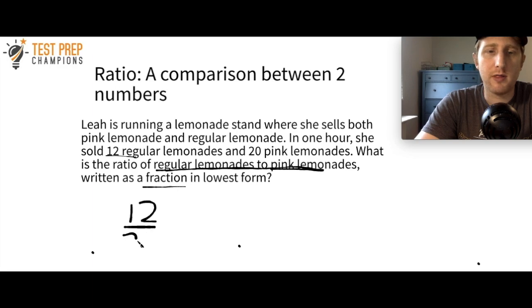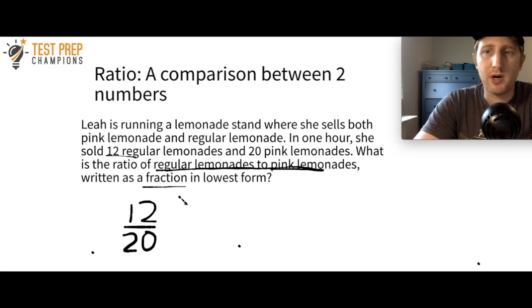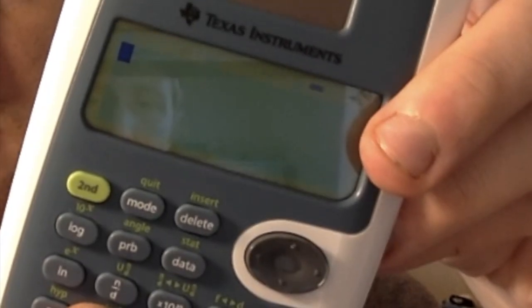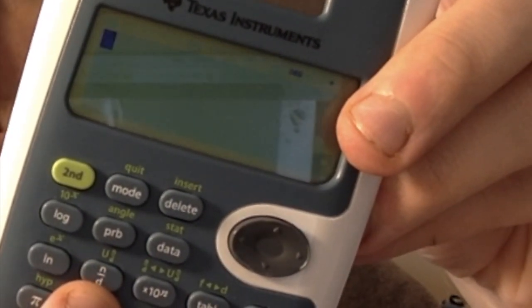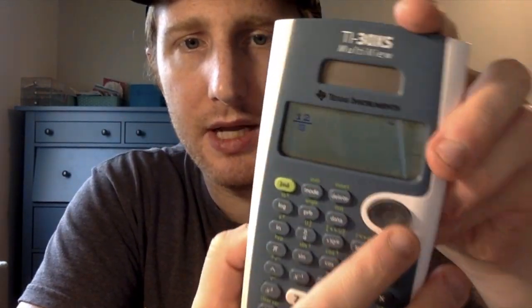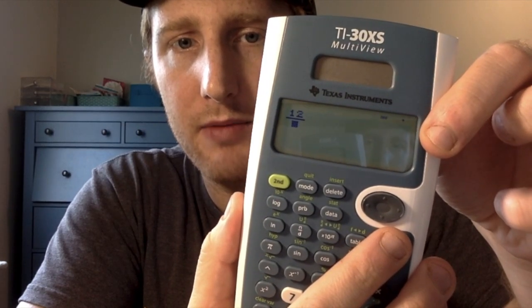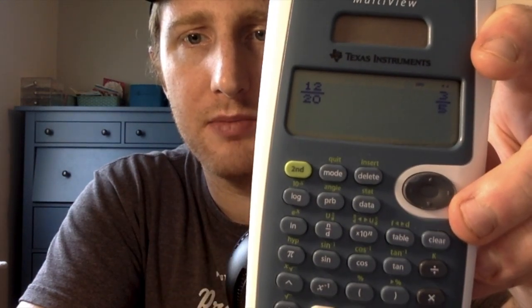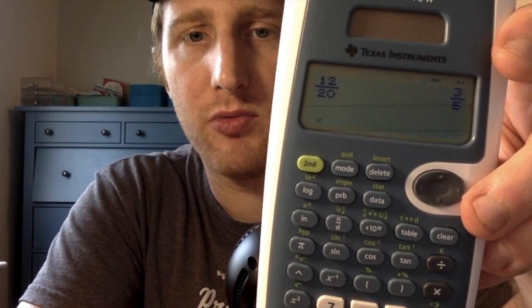The second really important thing is writing this as a fraction in lowest form. To reduce fractions the simple way, take your calculator and press the n over d button. It gives you a box over a box. Put in 12 on top, press the arrow to move to the bottom, and put in 20. Press the equal sign and it puts the fraction in simplest form: 3 over 5. That is the correct answer.